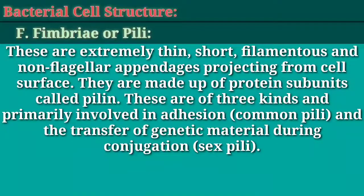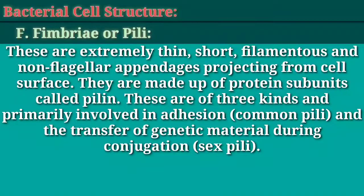F. Fimbriae or pili. These are extremely thin, short, filamentous and non-flagellar appendages projecting from the cell surface. They are made up of protein subunits called pilin. These are of three kinds and primarily involved in adhesion (common pili) and the transfer of genetic material during conjugation (sex pili), numbering 100-500 per cell. Size: 0.5-20 microns in length and 3-25 nanometers in diameter.